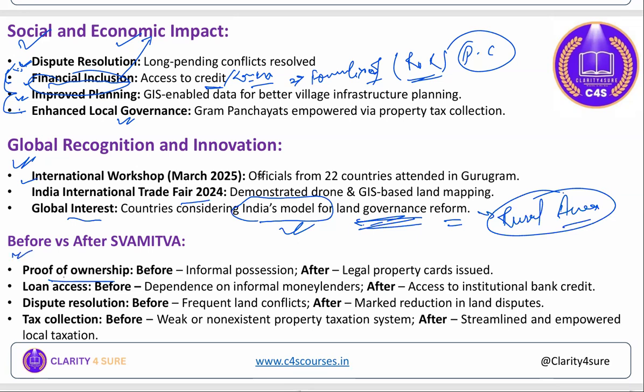Before Swamitwa: there was no proof of ownership; lands were informally possessed; people depended on informal money lenders and paid exorbitant rates of interest. After Swamitwa: legal property cards have been issued; people formally possess their land; they can access institutional bank credit. Dispute resolution improved significantly — frequent land conflicts have seen significant reduction. Tax collection at the Gram Panchayat level also improved, as proper property taxing can now be applied based on the property cards and land held by individuals.